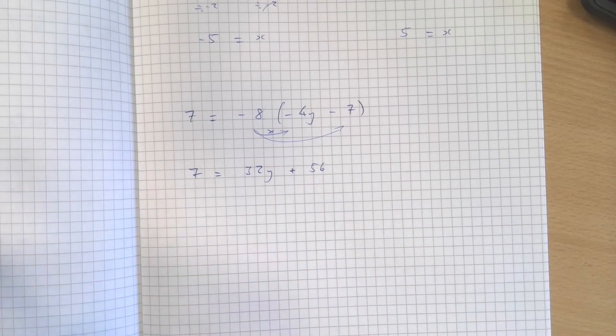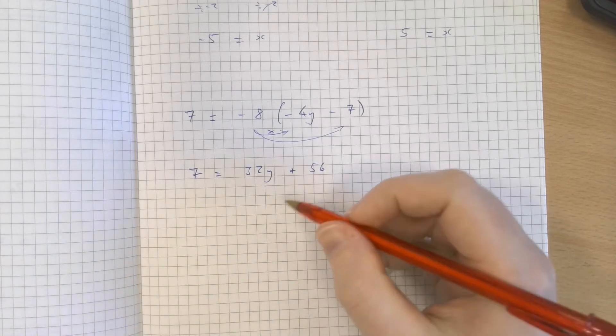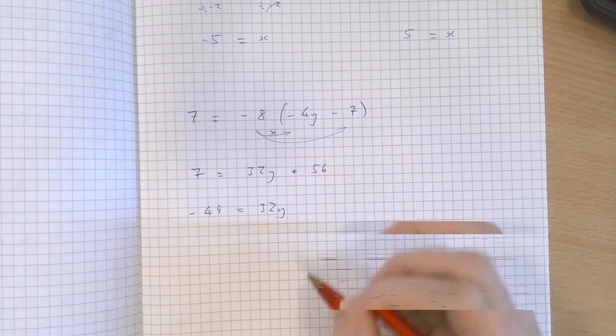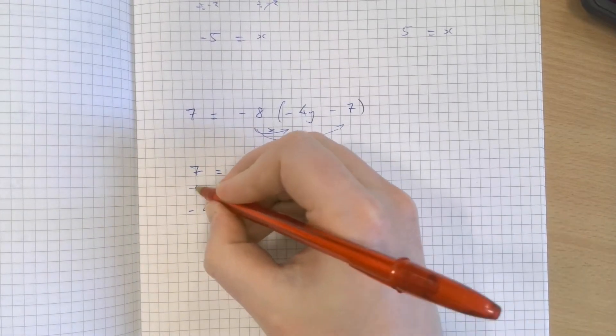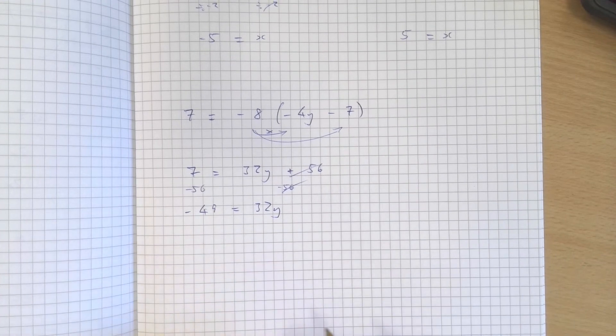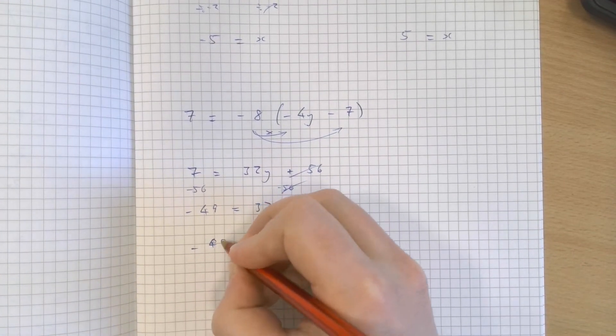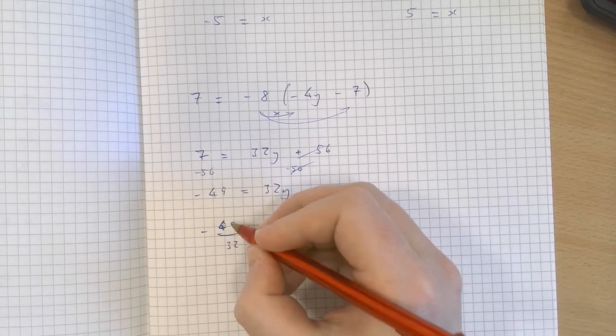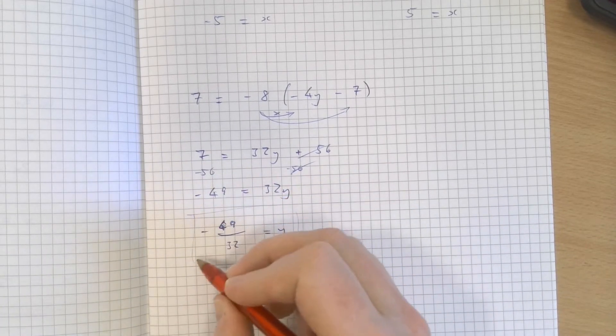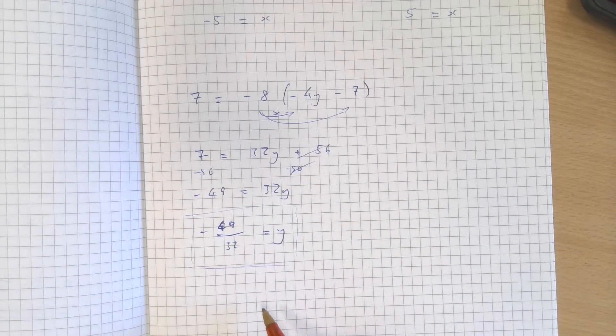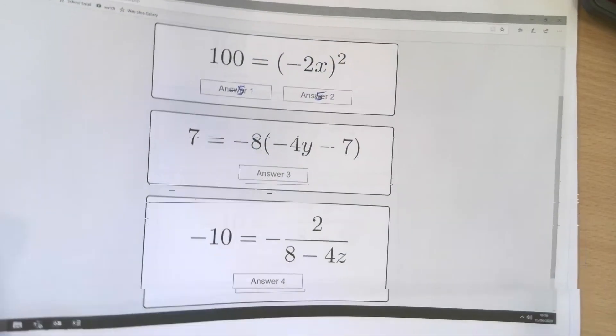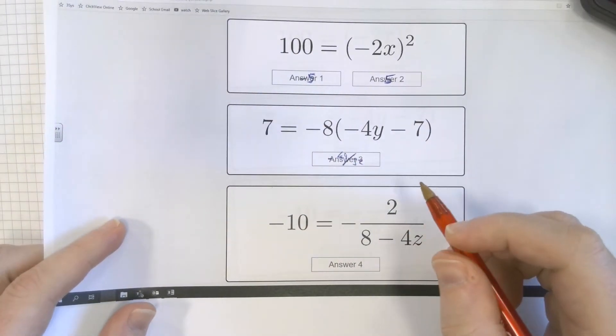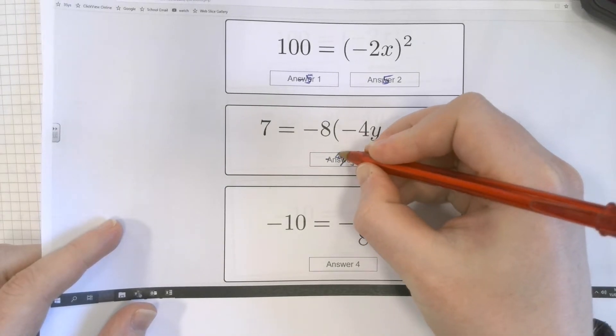7, take away 56. Taking away 56 from both sides leaves me with minus 49 equals 32y. Divide both sides by 32. And you know what? Actually, leaving that as a fraction is a perfectly adequate and acceptable thing to do here because that's a pretty complex fraction, negative 49 over 32. But that is indeed the answer. And you can type that in to the website using the slash key.